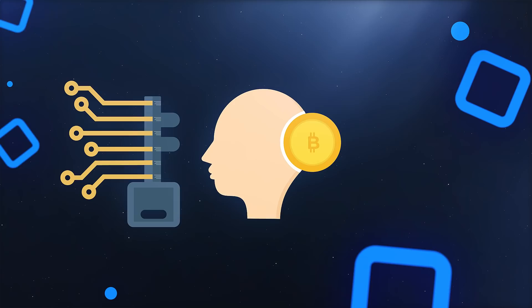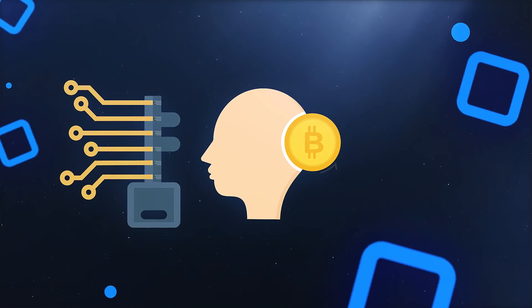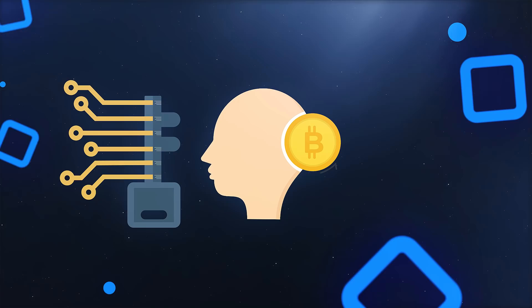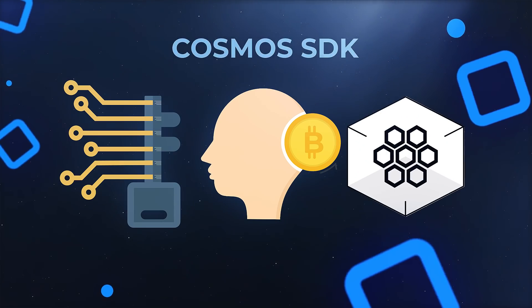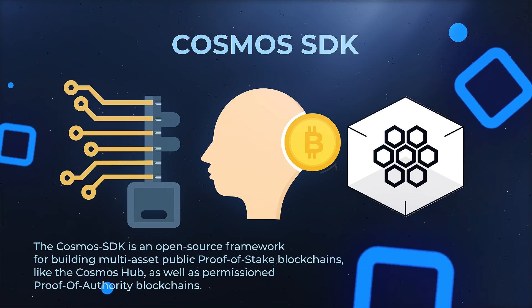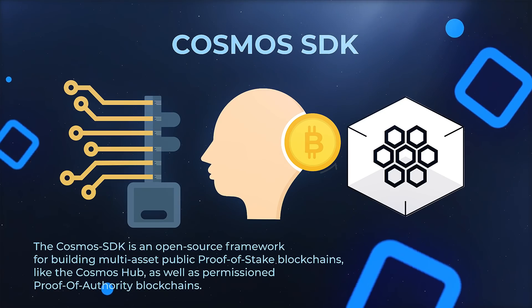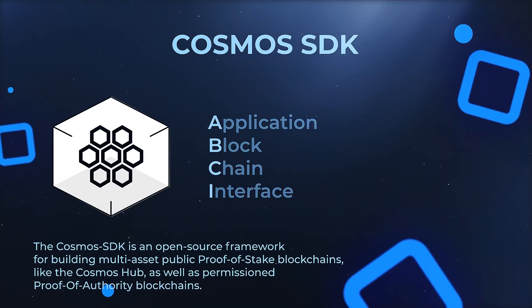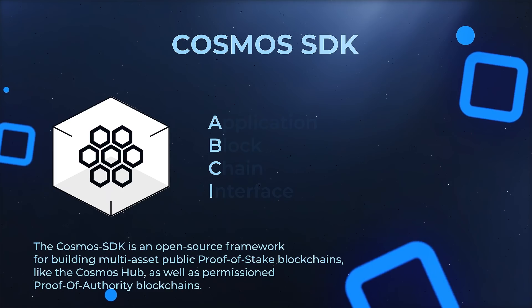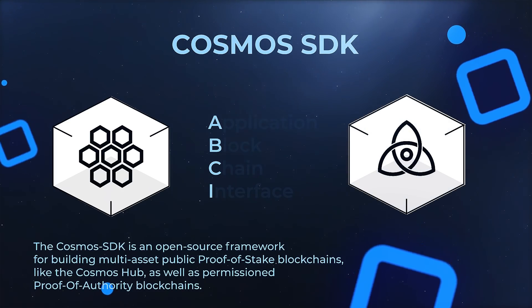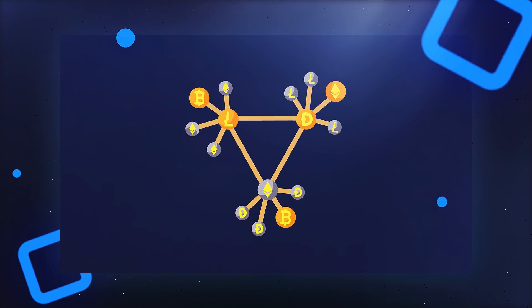Blockchains have usability issues — a blockchain's core design is usually complex and difficult to comprehend, and building chain-specific applications can be difficult. Cosmos addresses this issue with the Cosmos Software Development Kit (SDK), which allows developers to easily design applications in any language. The Application Blockchain Interface (ABCI) connects the Cosmos SDK to the Tendermint BFT core.